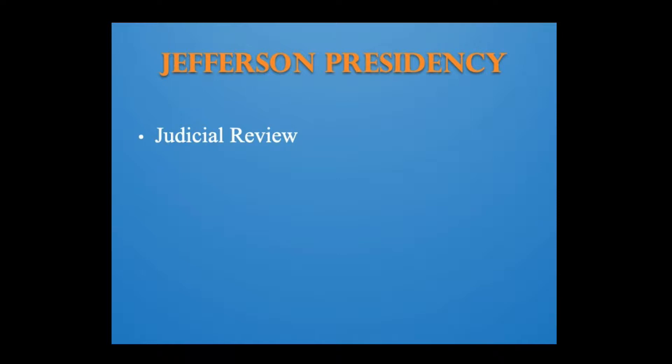Jefferson distrusted the unelected judiciary, but it was headed by John Marshall, an Adams appointee who was a strong believer in national supremacy. In 1803, the Marshall court decided the case of Marbury v. Madison. Just before leaving office, Adams appointed multiple justices of the peace in the District of Columbia, but Madison refused to commission them for their offices. Four of the appointees, one of them William Marbury, sued for their positions. Marshall declared the section of the Judiciary Act of 1789 permitting courts to order executive officials to deliver commissions unconstitutional and void because it exceeded the constitutional power of Congress.